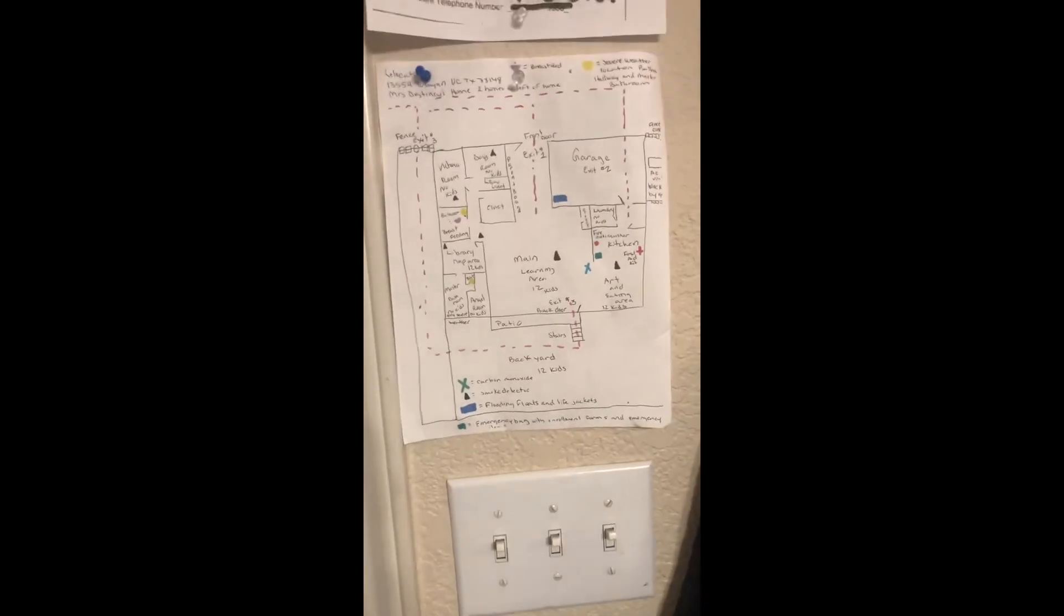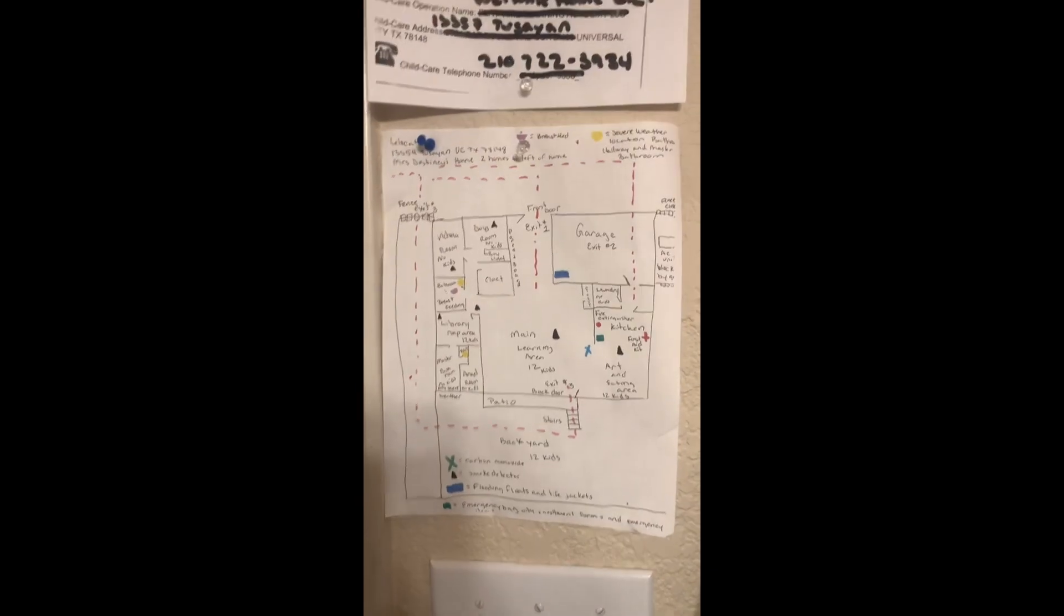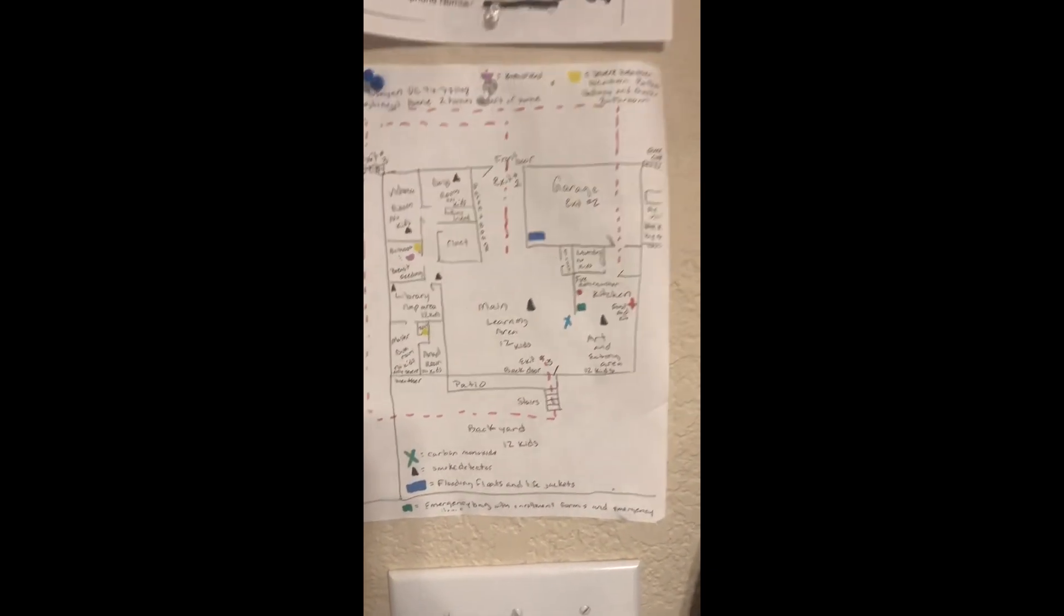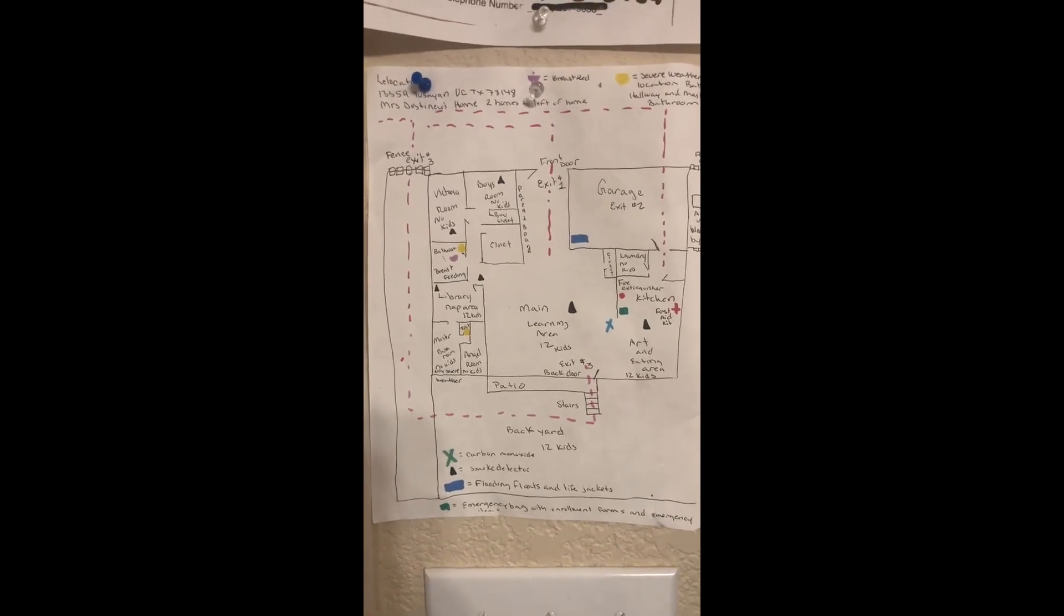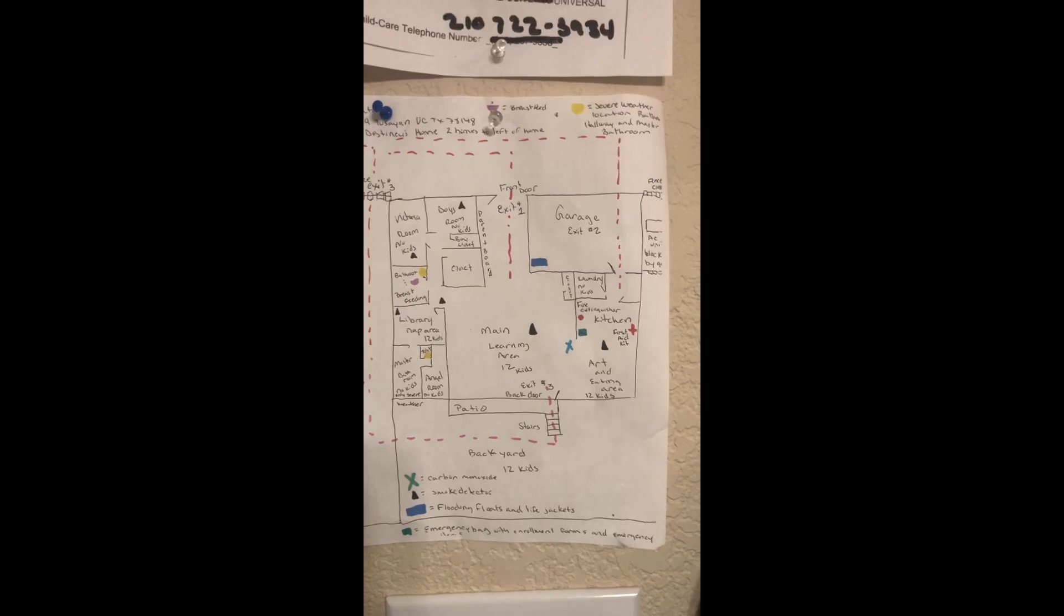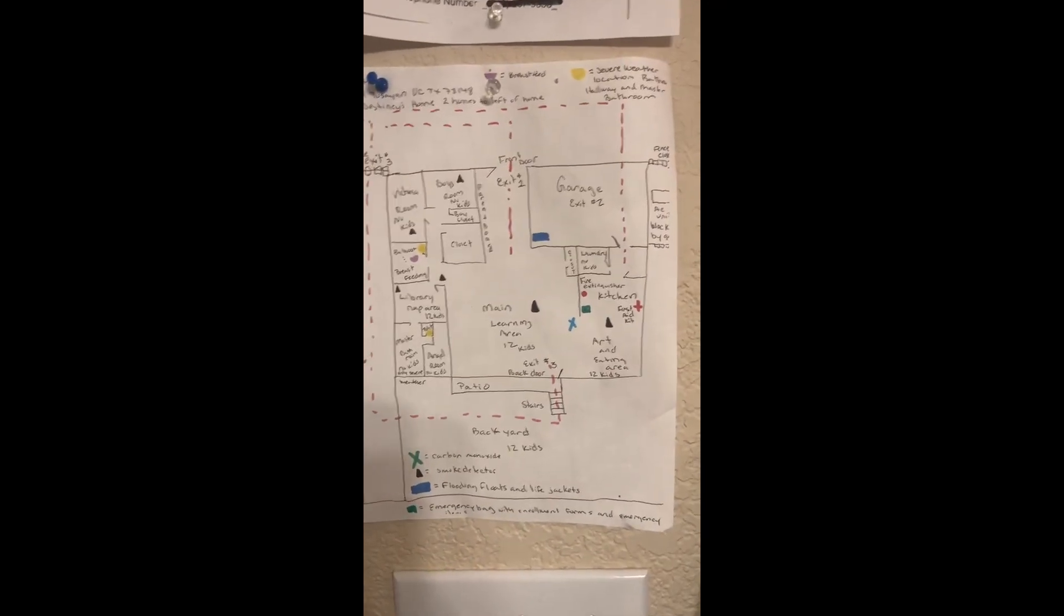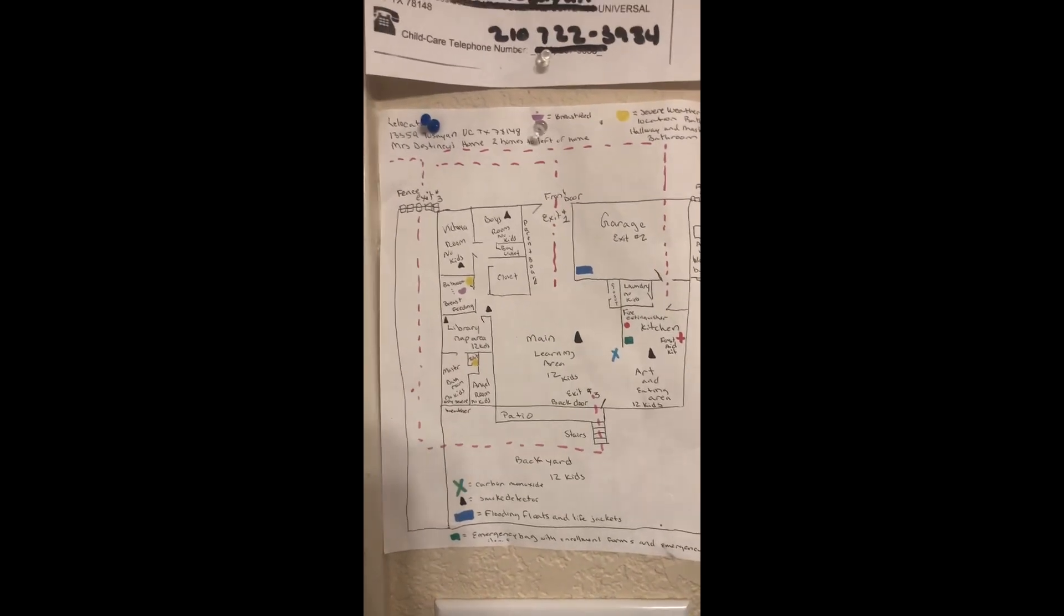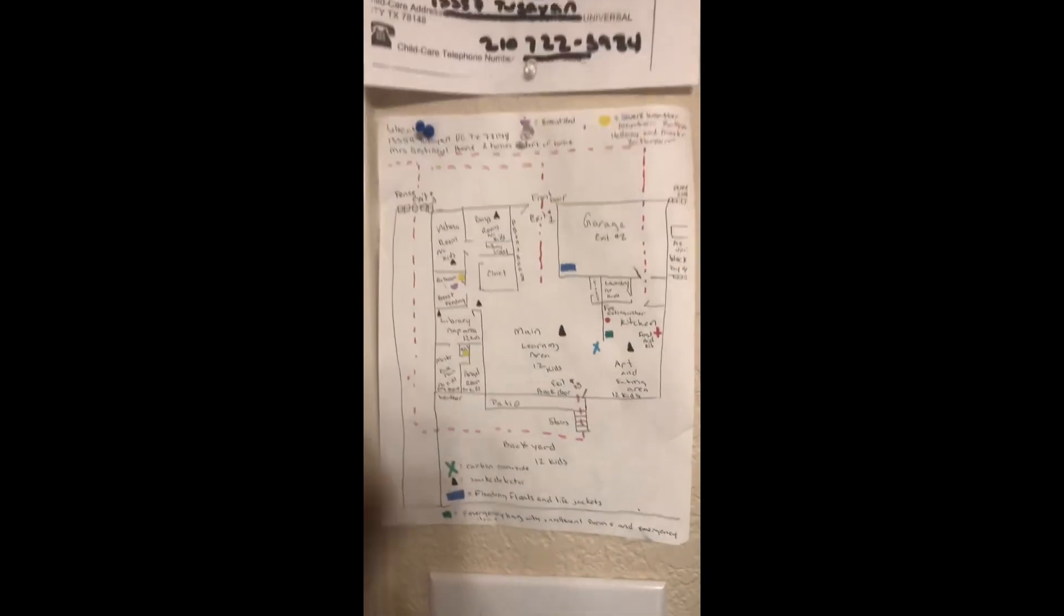All right, I had someone ask me a question. How did I do my evacuation plan and my floor plan? Basically, I wrote it out. I drew it. Now you can get with your home builder and actually get the floor plan and draw everything in there. But for me, there's so much you have to do with home childcare in the state of Texas that trying to make it look all fancy and stuff was not even on the top of my mind.